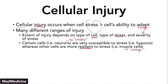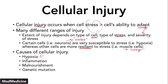That is essentially how cellular injury occurs. When it comes to the causes, you have many different causes like hypoxia, which we're going to discuss in this lecture, but we're also going to be discussing in the upcoming lecture other causes of cellular injury, like inflammation, malnourishment, genetic mutations, and even trauma. So stay tuned for the upcoming lectures.